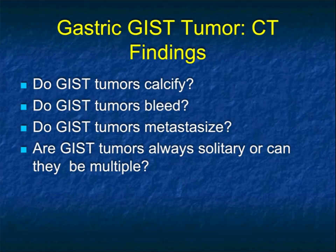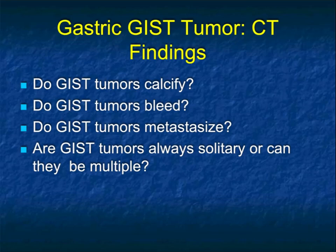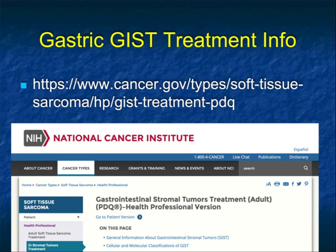When we quiz people on GIST tumors, these are things they often don't think about. Do GIST tumors calcify? Yes. Do they bleed? Yes. Do they metastasize? Yes. And are they always solitary or can they be multiple? Invariably they're solitary, though I have seen one or two cases where they're multiple.